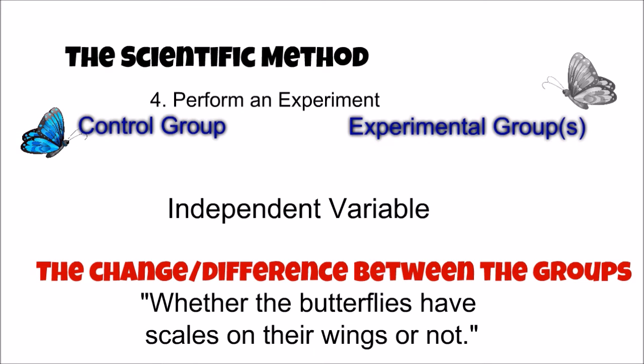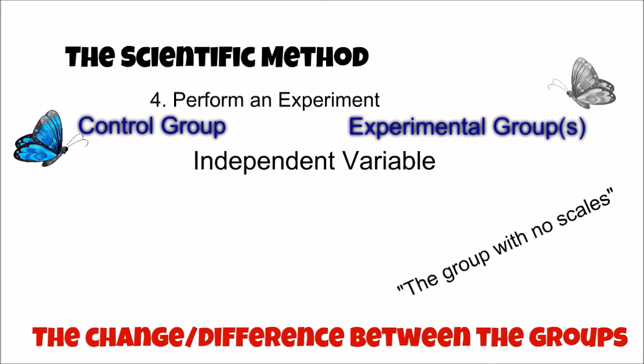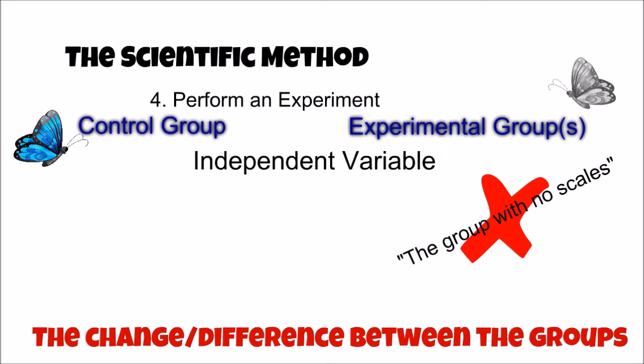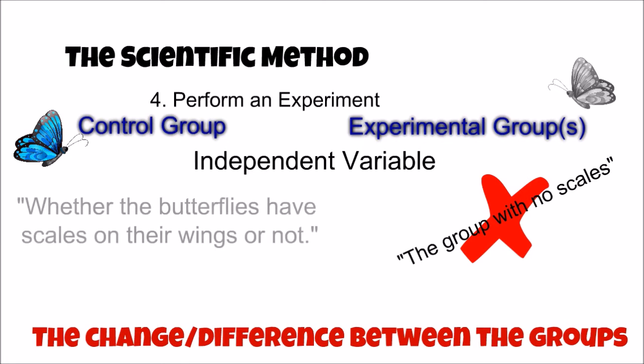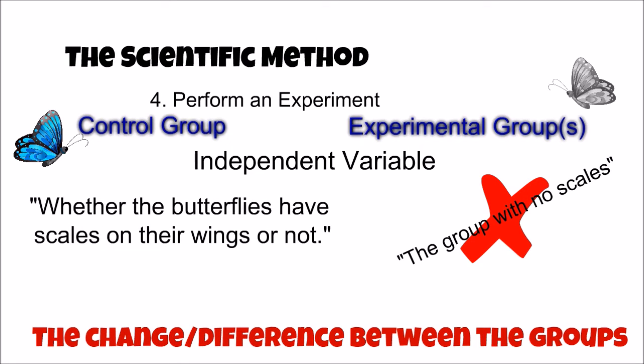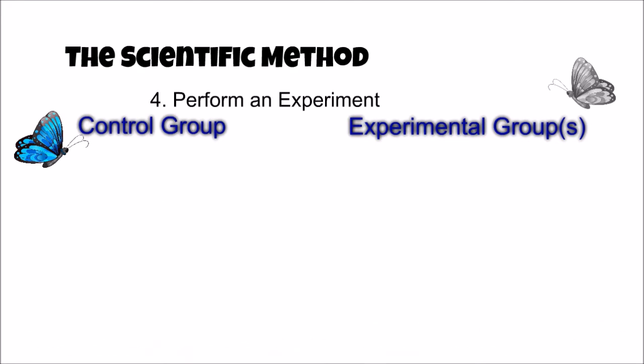To be identified correctly, the independent variable must always be stated as the difference between the experimental and control groups. An easy mistake would be to say the butterfly group with no scales is the independent variable. This statement is incorrect because it does not state the difference between the groups. It only describes the no scale group. Again, the independent variable states the difference between the experimental and control groups, which for this experiment is best stated as whether the butterflies have scales on their wings or not.